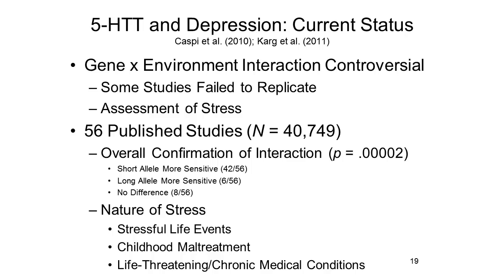The gene-by-environment interaction in depression involving the 5-HTT gene has stimulated a great deal of interest, but it's also been controversial. Some researchers have failed to replicate Caspi's findings, while some critics have complained about the assessment of stress. Katya Karg and her colleagues recently surveyed 56 studies involving more than 40,000 subjects and found that, overall, these studies confirmed the G-by-E effect. A history of stress, especially defined by childhood maltreatment or life-threatening or chronic medical conditions, coupled with the short form of the 5-HTT gene, greatly increases one's risk for a major depressive episode.